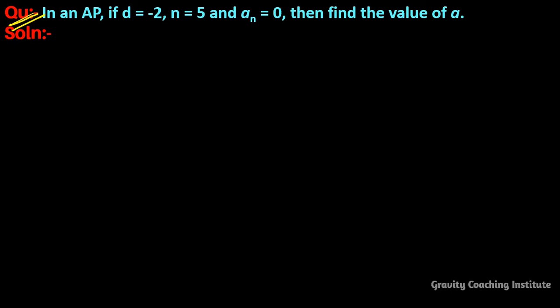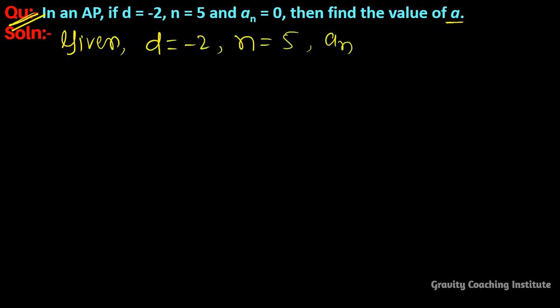In an AP, if d is equal to minus 2, n is equal to 5, and aₙ is equal to 0, then find the value of a. Here, the given values are: d = -2, n = 5, and aₙ = 0.